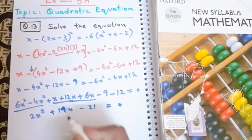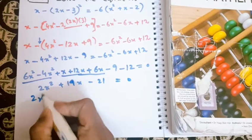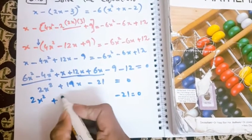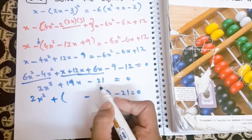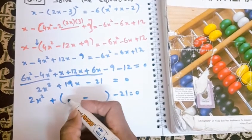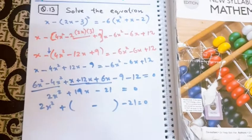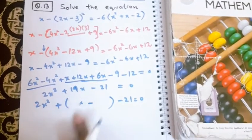2x² + 19x - 21 = 0. This sign will be written in the middle. 2 times 21 is 42. So we need factors that give 42. That would be 21x and -2x.